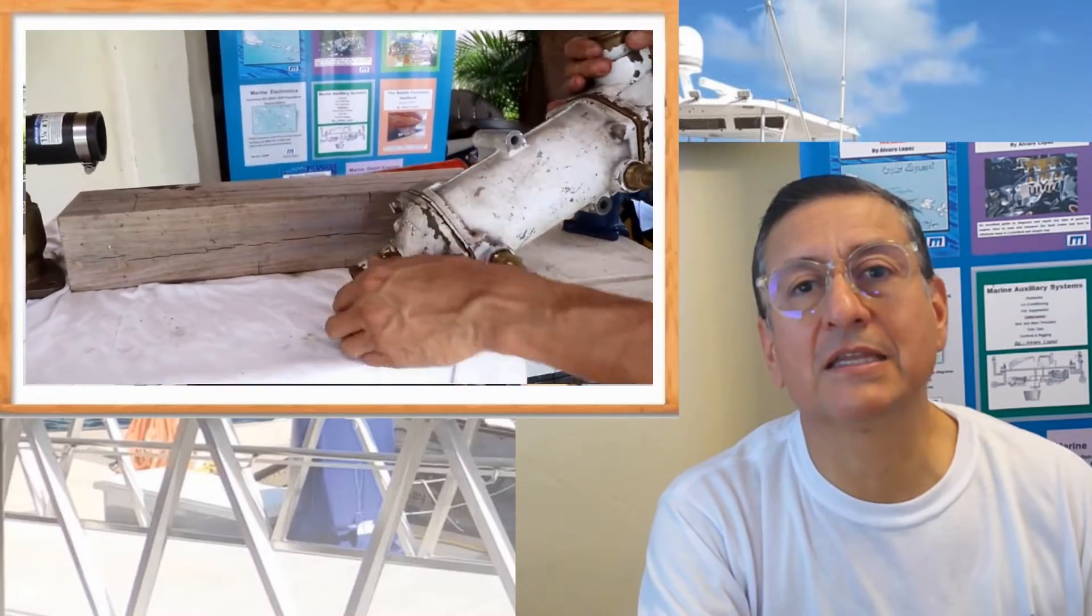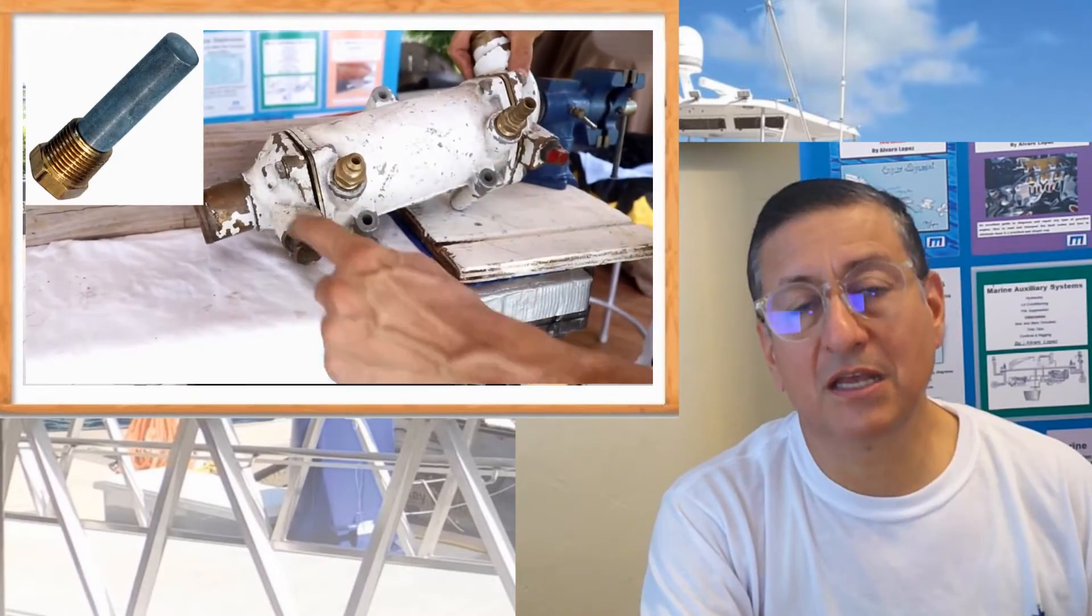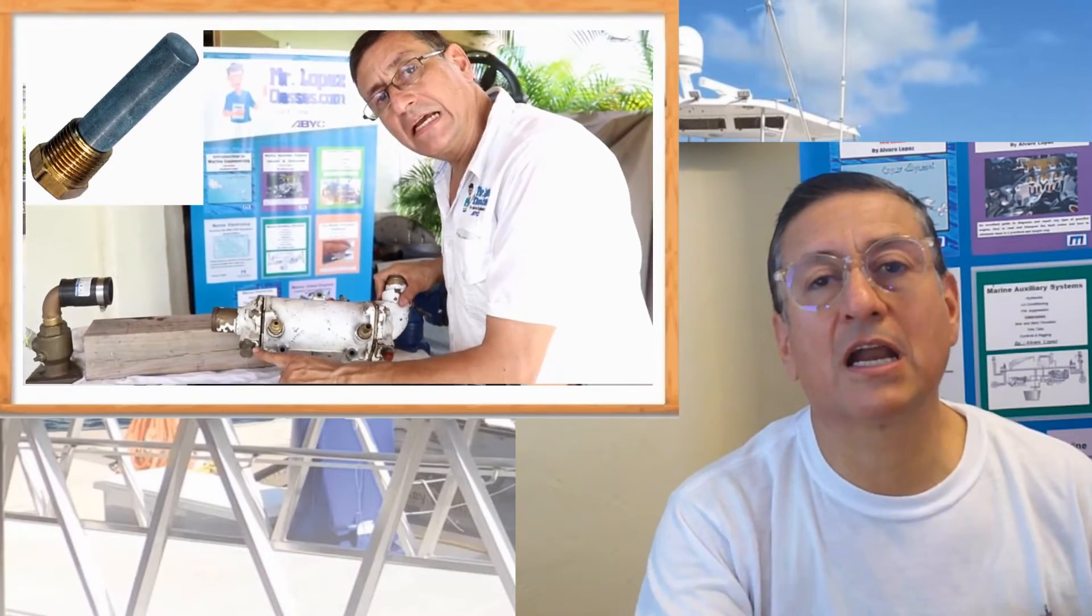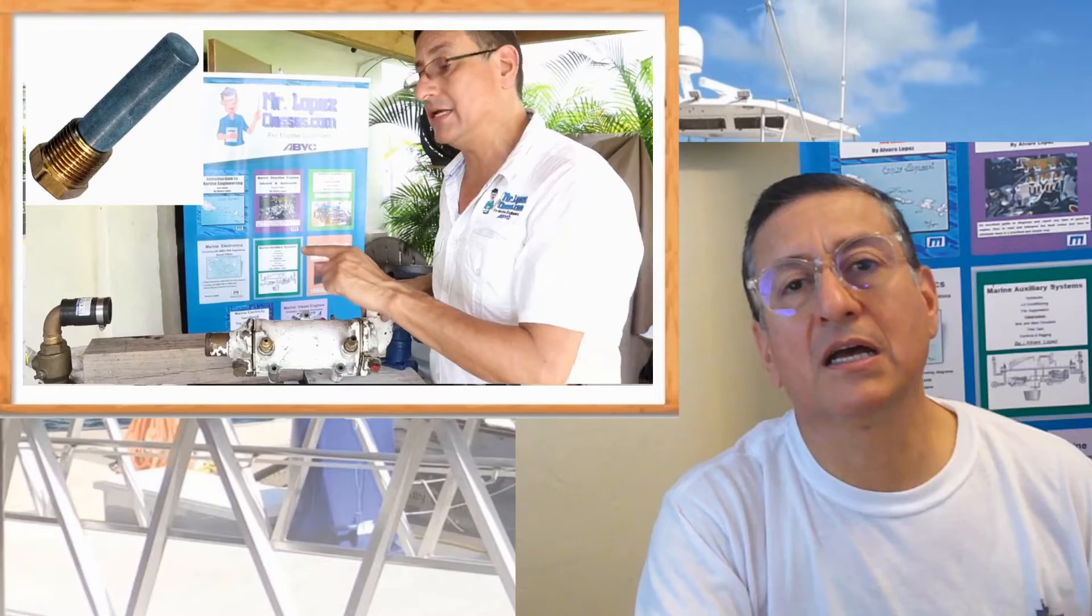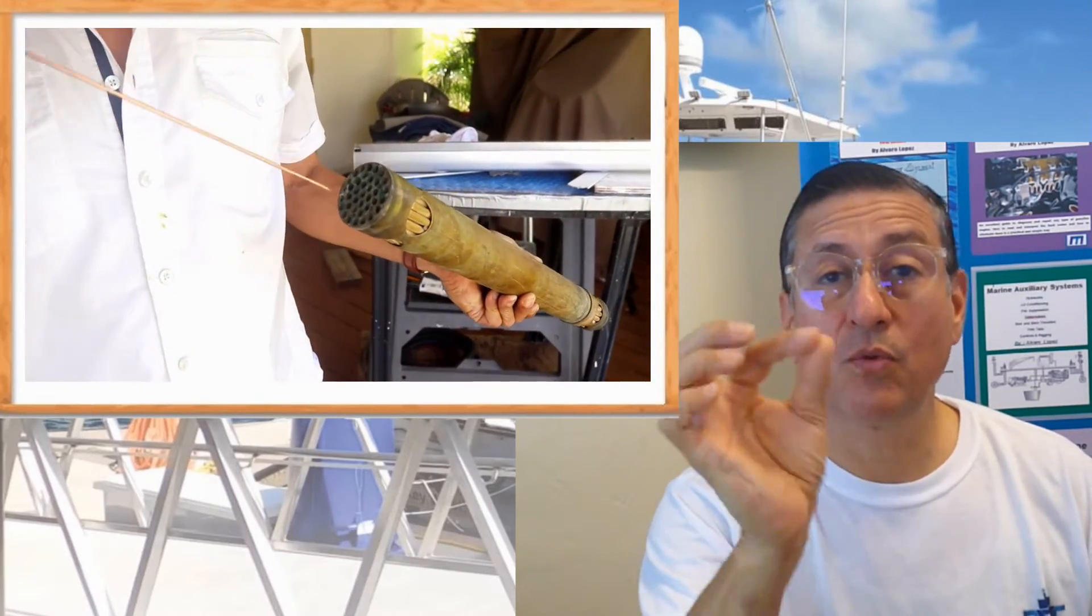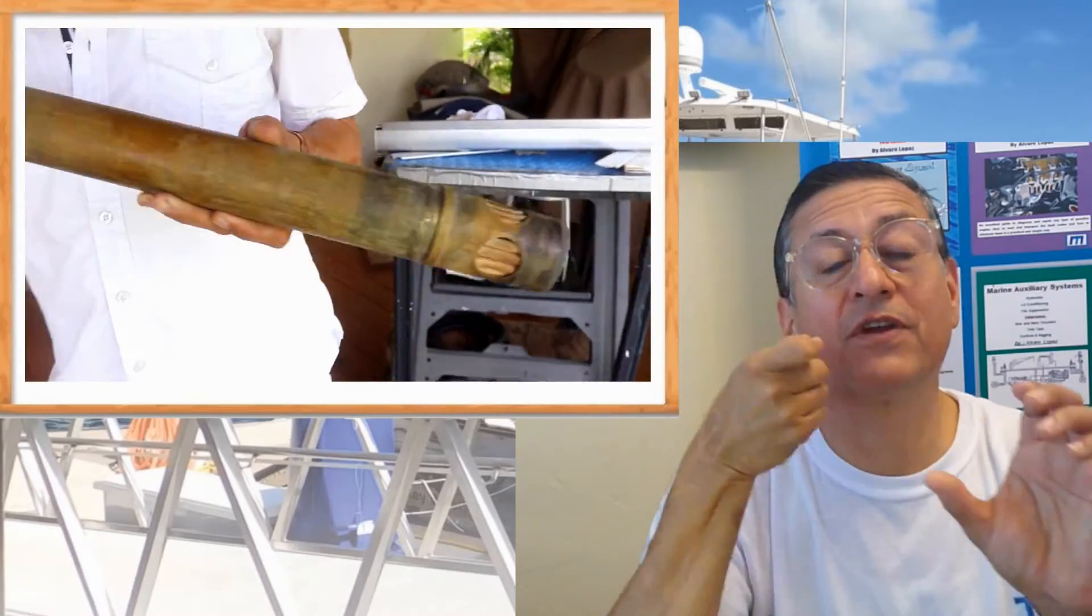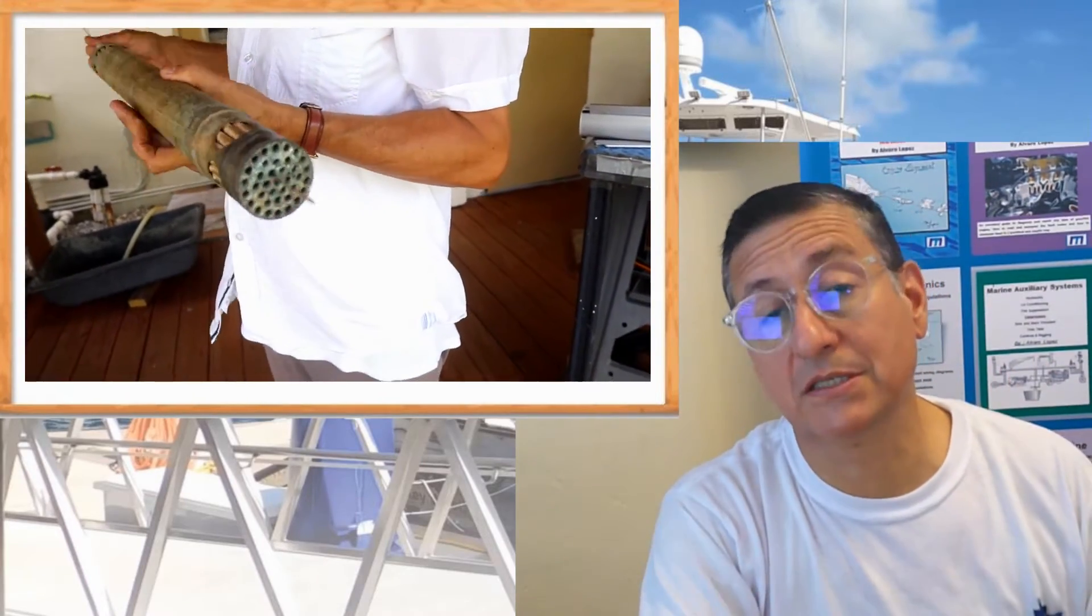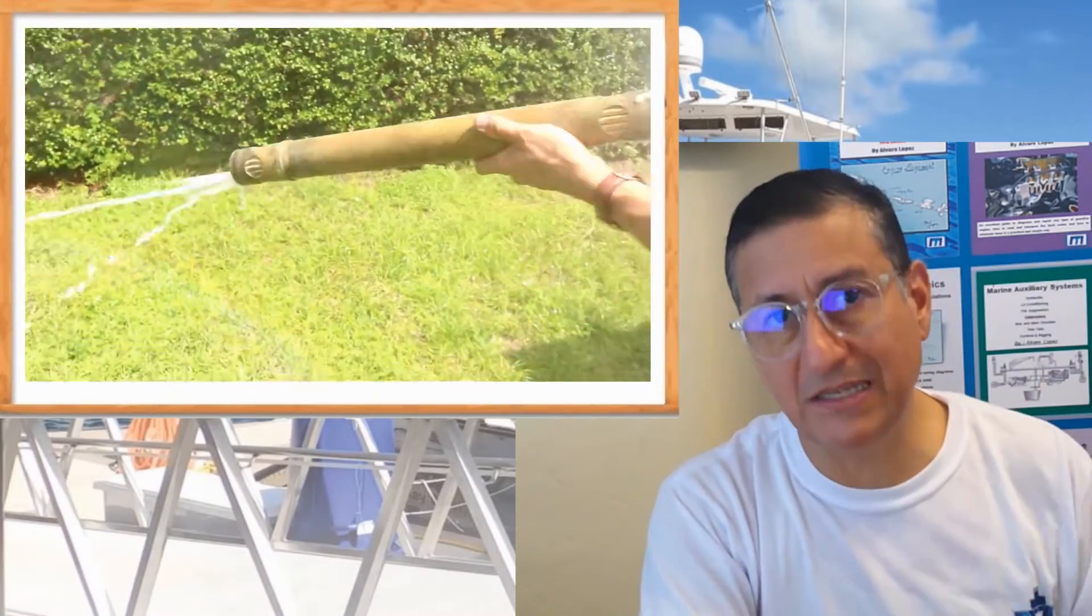Another possibility is that the pencil zincs located at each end of the heat exchanger are completely eroded, and those pieces of zinc clogged the pipes of the raw water. You need to clean with a wire, like I'm doing right now, and with fresh water clean the heat exchanger. This is the procedure. It's lack of raw water. This is the problem.